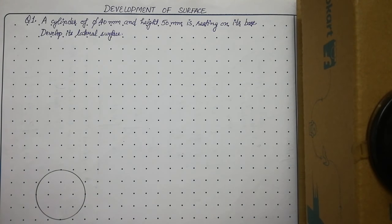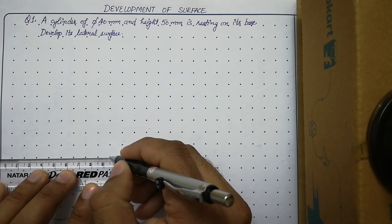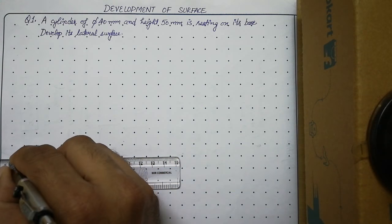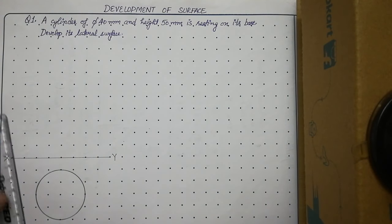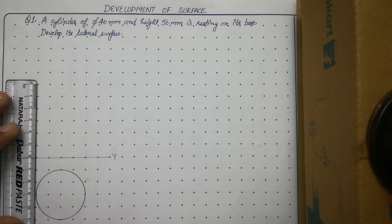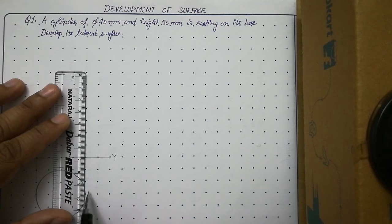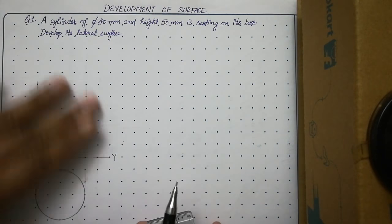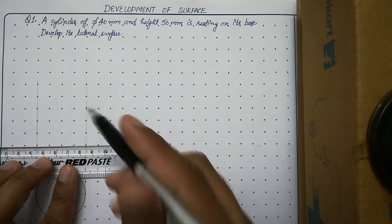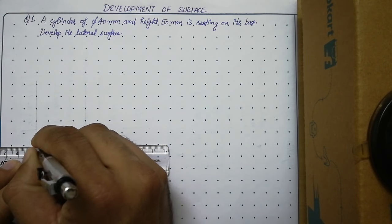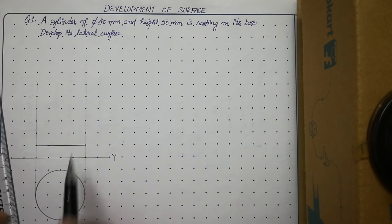After this, draw the XY line above the circle because we are solving it in first angle of projection, so the top view will lie below the XY line. Call this X and Y. After this, take projections from this top view. From the reference line, leave some gap and draw a thick line in between the two projectors. This is the bottom face of the cylinder.